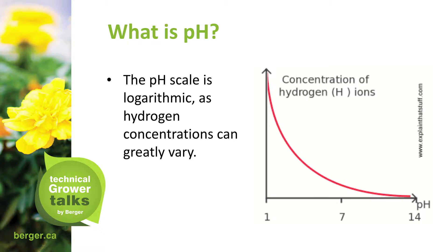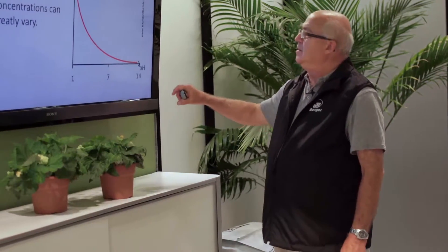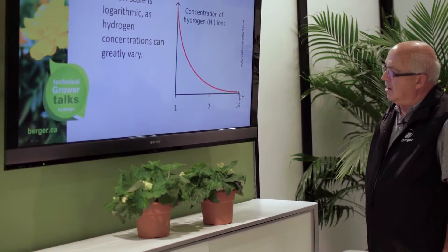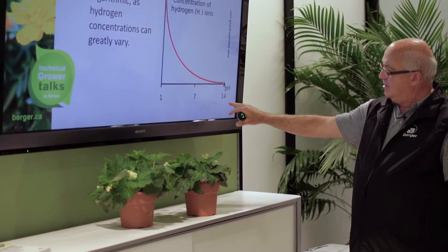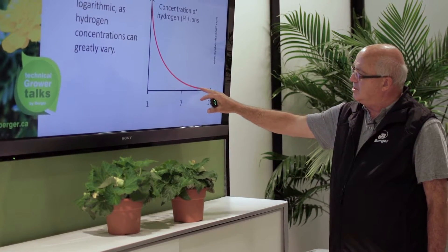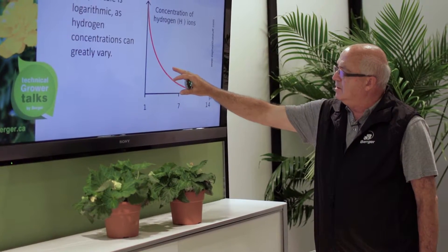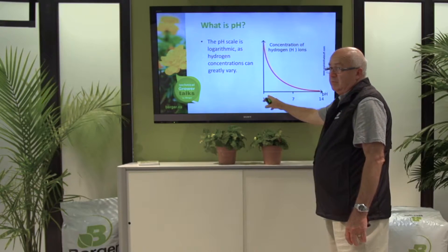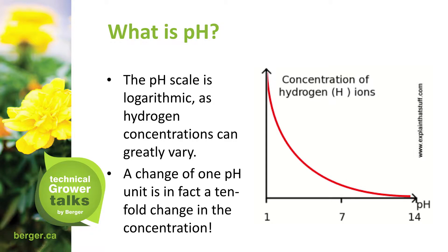The pH scale is logarithmic, as hydrogen concentrations can greatly vary. With a very low concentration of hydrogen ions, you can see that the pH is even at 14. As the hydrogen ions increase, the pH goes very low. A change of one pH unit is in fact a tenfold change in the concentration.